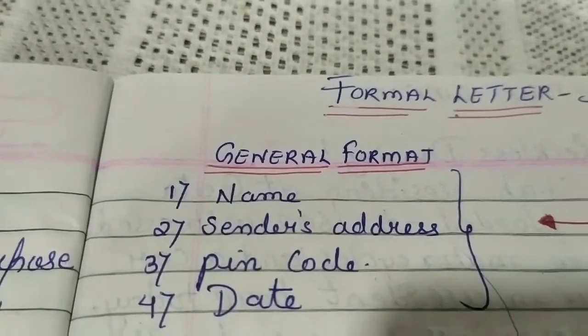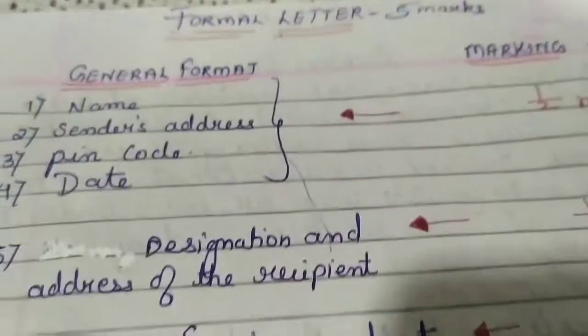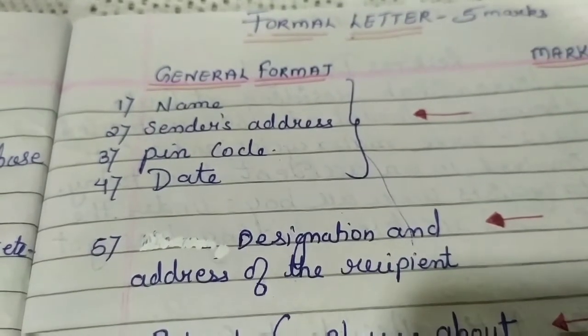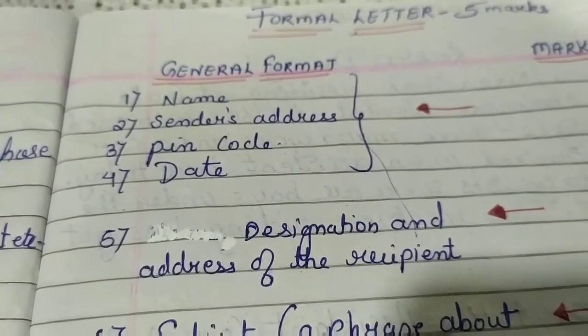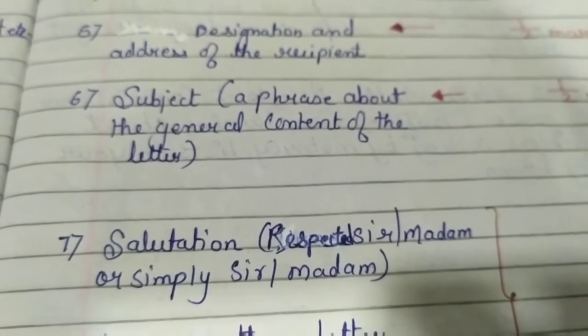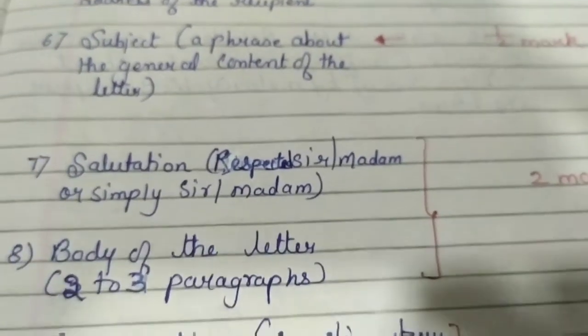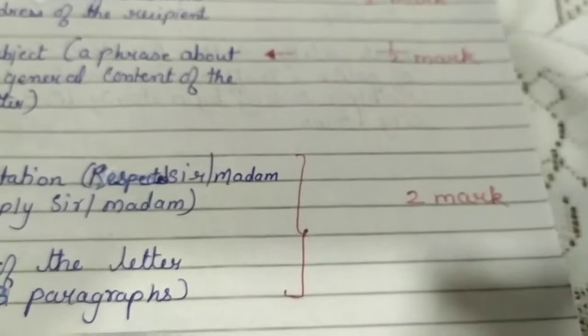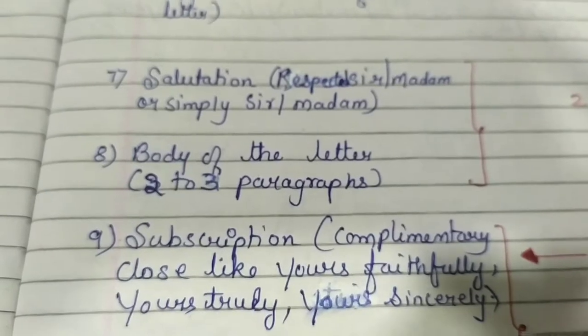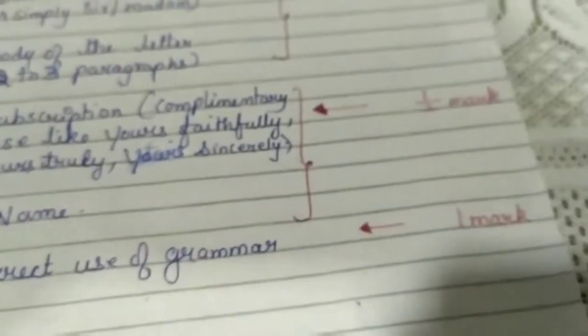To recap the general format: name, sender's address, pin code, and date — half mark. Two addresses are required: your own and the person you're writing to — half mark. Subject — half mark. Salutation with the body in two to three paragraphs — two marks. Subscription with name — half mark. Correct grammar — one mark.